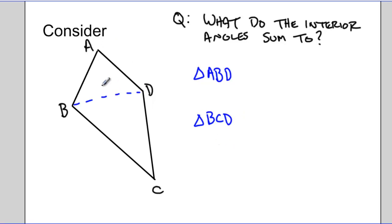We know that inside a triangle all the angles add up to 180 degrees. And likewise, in triangle BCD, if I added up all the interior angles, they would add up to 180 degrees.